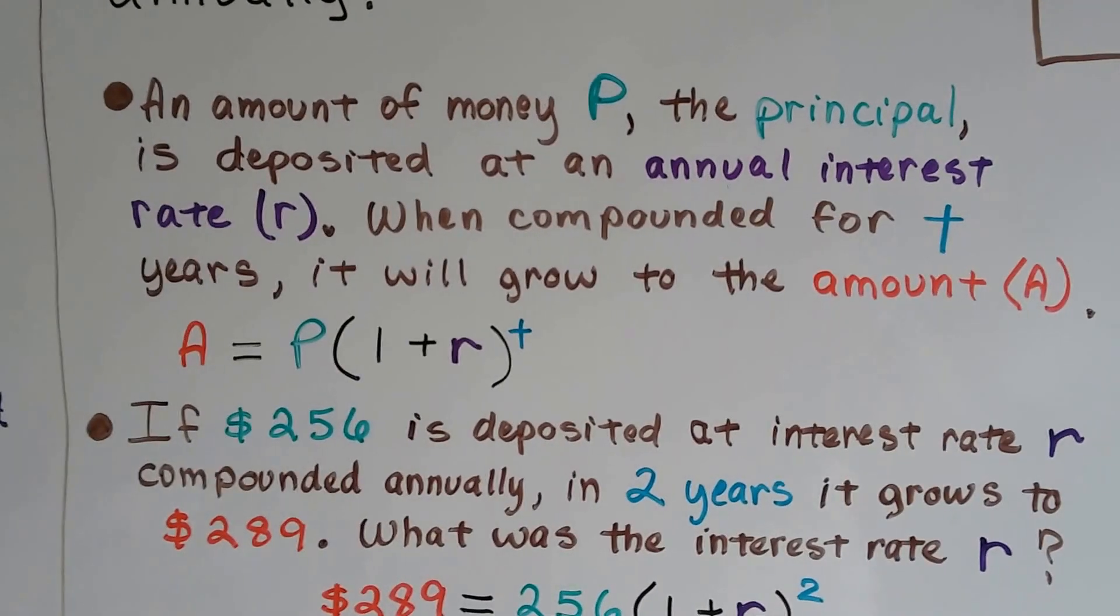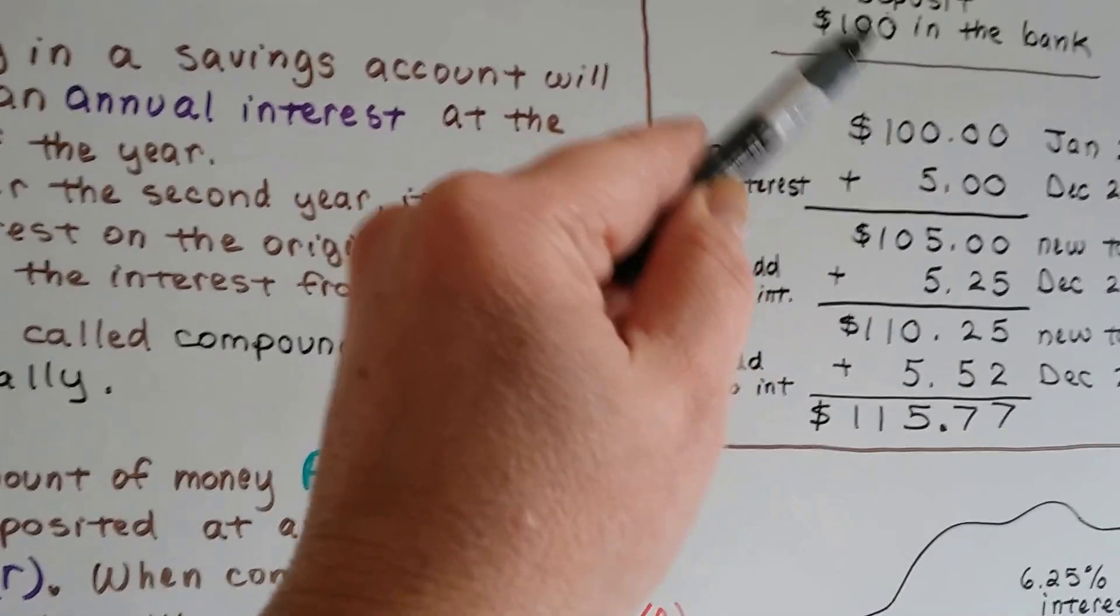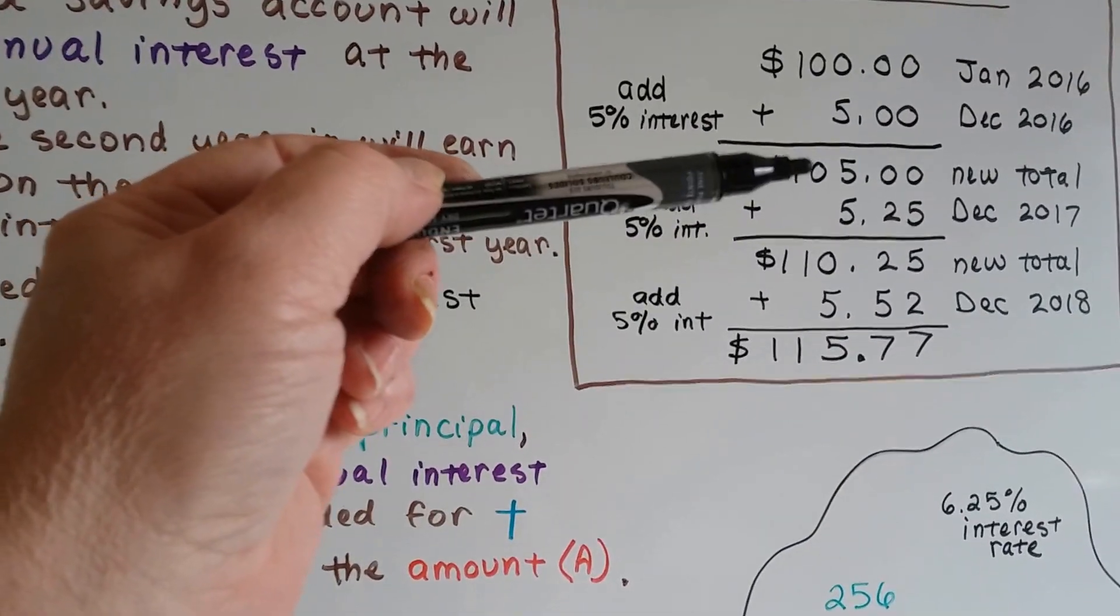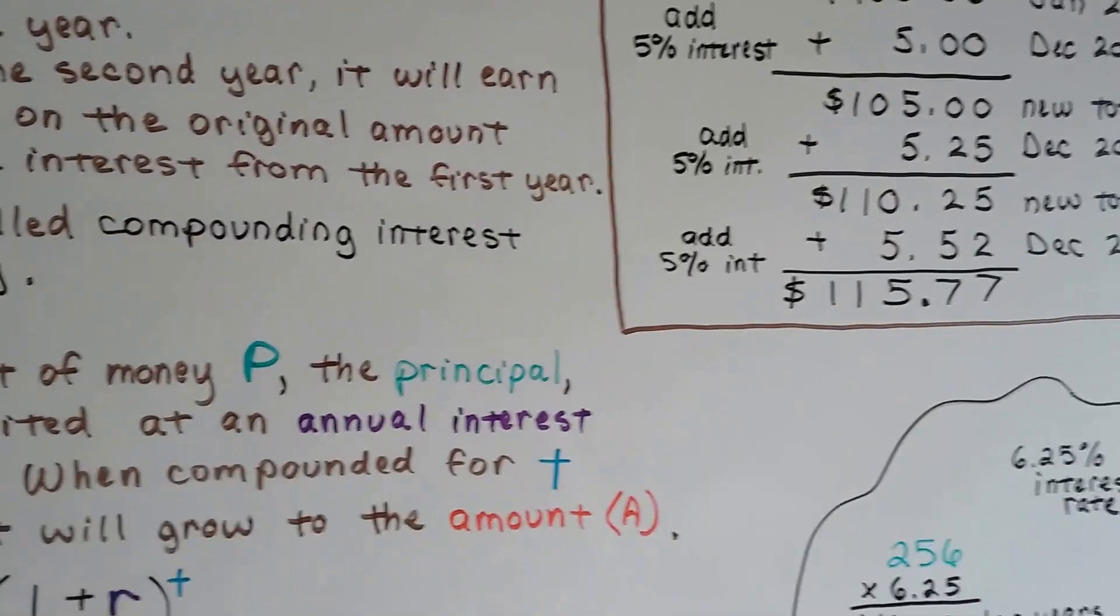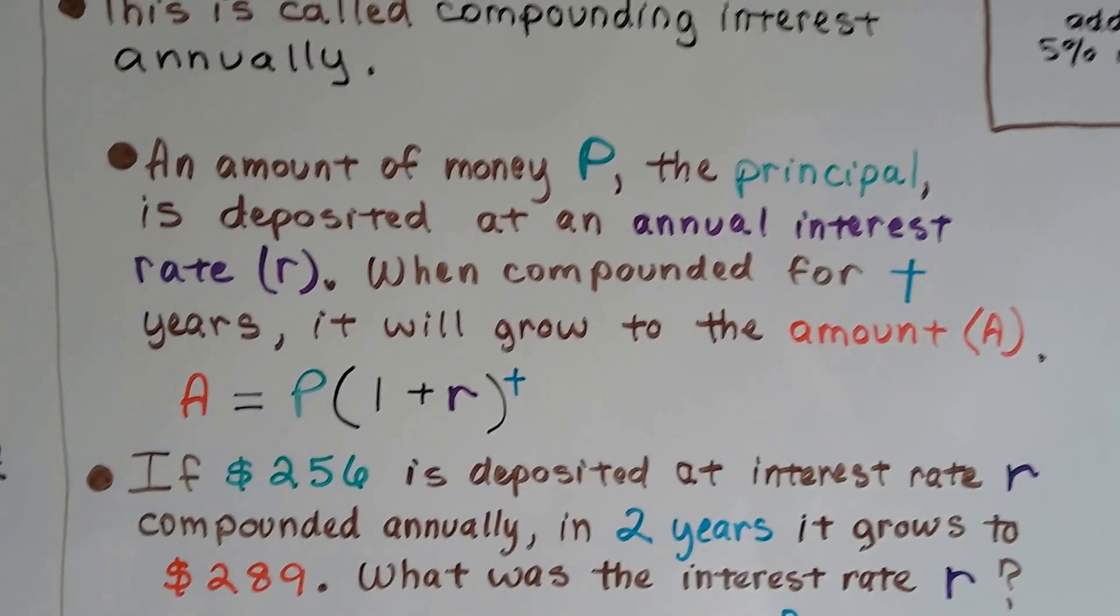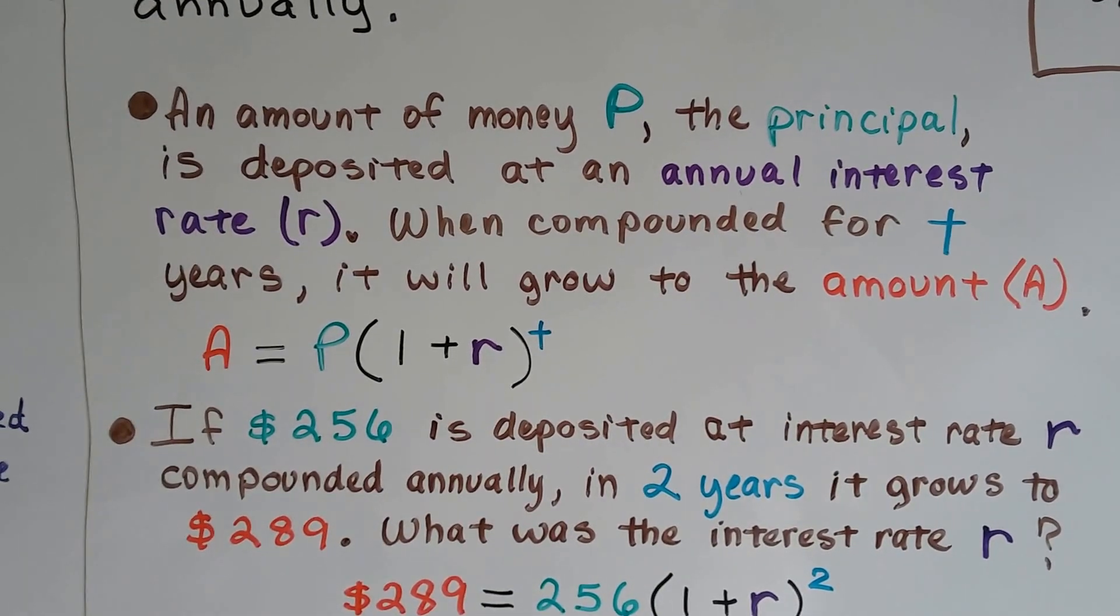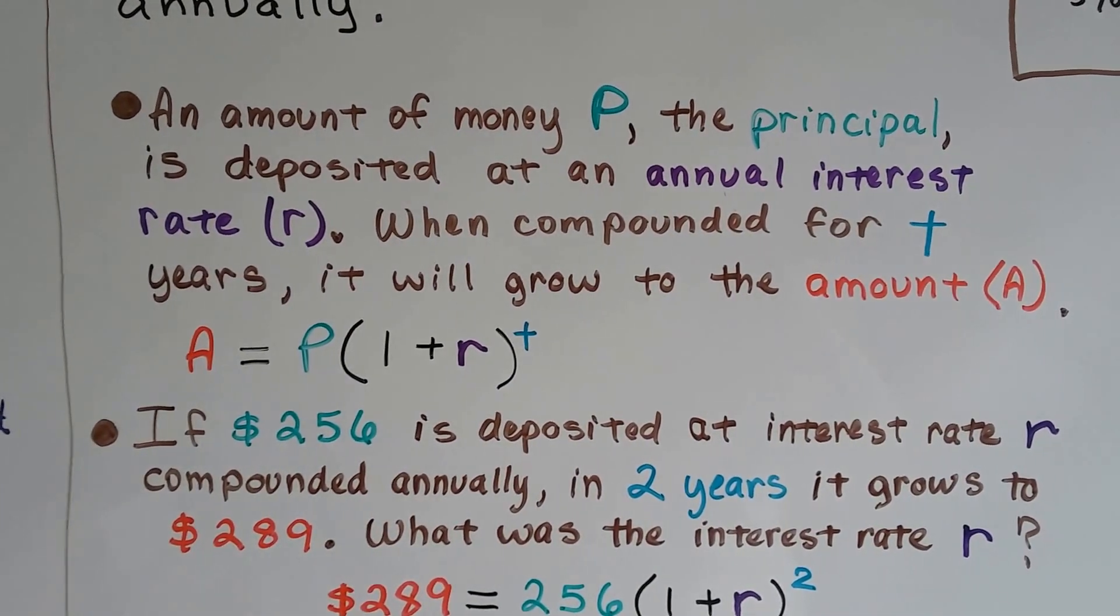An amount of money P, that's the principal. That $100 is the principal. It's the initial amount. And then, for this year, that's the principal. And for this year, that's the principal. The amount of money P, the principal, is deposited at an annual interest rate R.